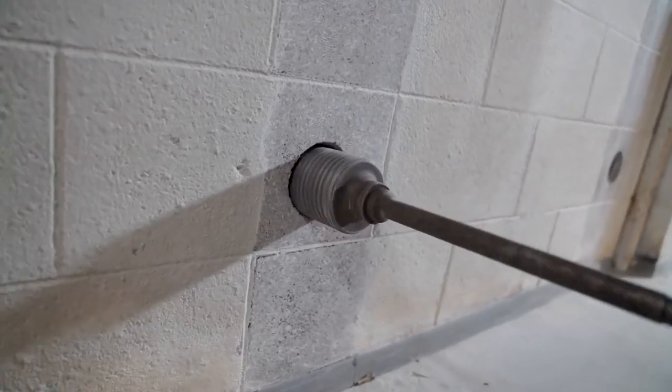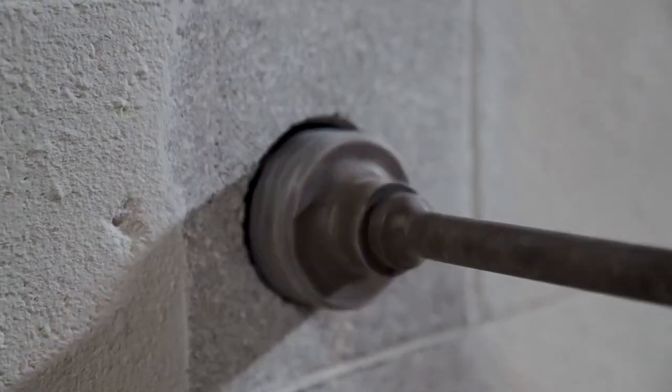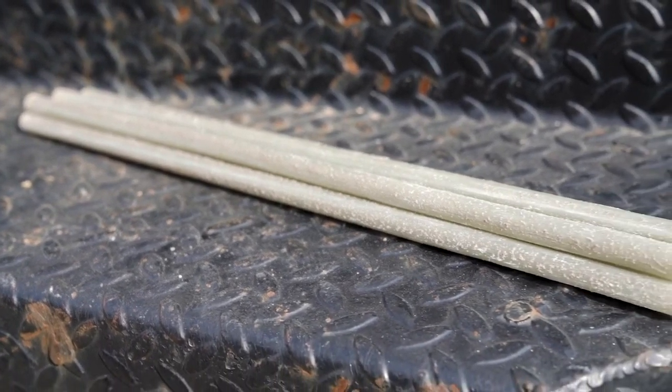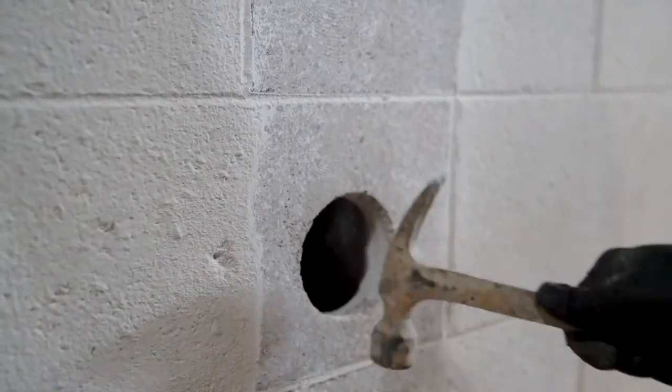Drill a hole in the CMU block three courses up from the footing for each carbon fiber support. Insert the 18 inch number four CFS support bar through the hole created.